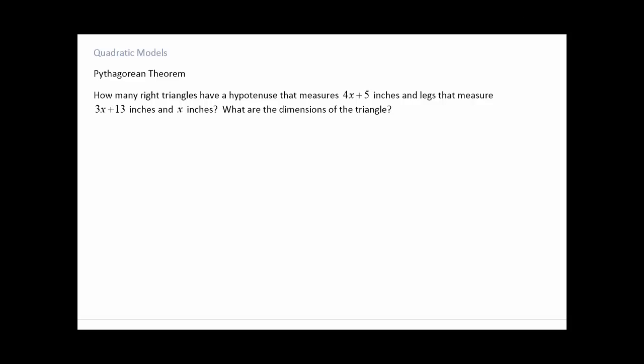The last topic that we will address as far as modeling goes, and keep in mind there's other things out there, but most of the time it's going to be one of these types of equations that we've encountered. So the last type we're going to look at are applications of the Pythagorean theorem. So let me kind of draw out a right triangle, and we can label things as we see them. How many right triangles have a hypotenuse that measures 4x plus 5 inches and legs that measure 3x plus 13 and x. What are the dimensions of the triangle? Okay, so the question being, how many, we've got three sides, three unknowns, how many different ways can I come up with numbers that fit this particular pattern?